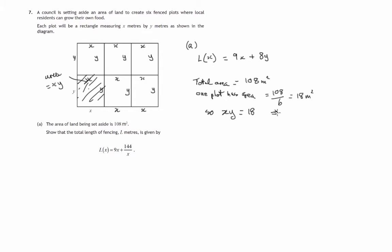So from that I can see that y is going to be the same as 18 over x. So we can go back up to that total length of fencing formula which we had 9x plus 8 lots of y, but we now know y is 18 over x.